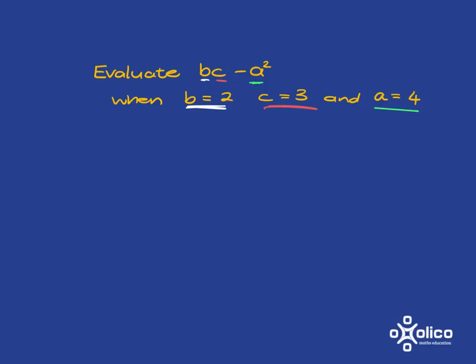So what we've got is 2 multiplied by 3. And then after that, we need to subtract a squared, and a, we are told, is 4. So it's 4 squared.